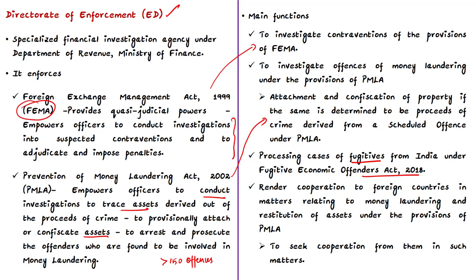Another important function of the Enforcement Directorate is to cooperate with foreign countries in matters related to money laundering and restitution of assets under the provisions of PMLA, and also to seek cooperation from them. It is based on this function that the Enforcement Directorate has now confiscated the consignments in connection with the Punjab National Bank fraud case.